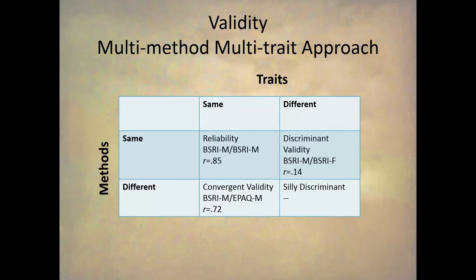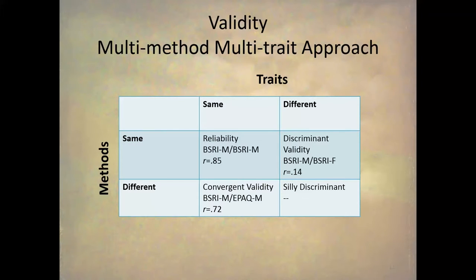We correlate the BEM Sex Role Inventory masculine scale with itself — that gives us a correlation of 0.85, which is reliability. Then we correlate the same method, the BSRI, with different traits: the BSRI masculine scale with the BSRI feminine scale. That correlates at 0.14, and that's our discriminant validity. Then we correlate different methods with the same trait — that gives us our convergent validity. Correlating the BSRI masculine score with the EPAQ masculine score gives us 0.72, which is evidence of convergent validity. With low discriminant validity (r = 0.14) and very high convergent validity (0.72), that's evidence that the BSRI M is a valid measure.